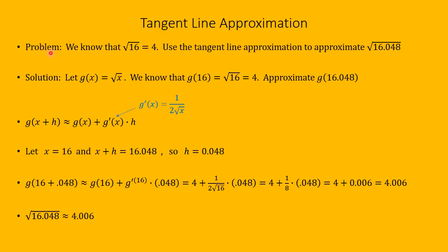Let's look at a typical problem, something like you might have seen in a Calculus 1 course. We know that the square root of 16 is 4. Let's use the tangent line approximation to approximate the value of the square root of 16.048. We'll let g of x be the square root of x. Since we know g of 16 equals 4, we want to find g of 16.048, in other words the square root of 16.048, using pencil and paper.